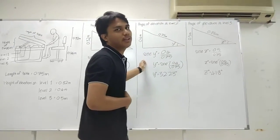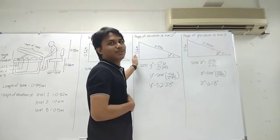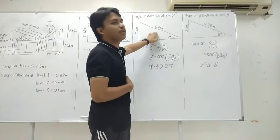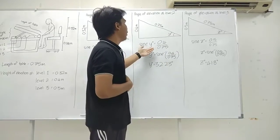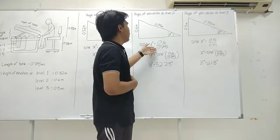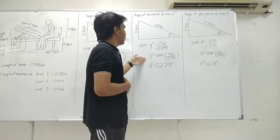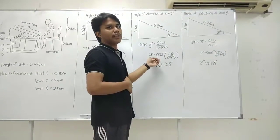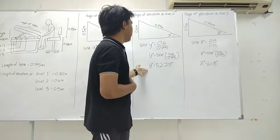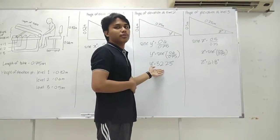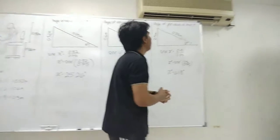Next, we calculate the angle of elevation at level 2. The height of the table is 0.4 meters and the length is still 0.75 meters. Using sine: sine(y) equals 0.4 divided by 0.75. Moving sine to the other side, we get the inverse sine of 0.4 over 0.75, and the angle of elevation at level 2 is 32.23 degrees.